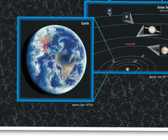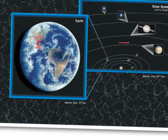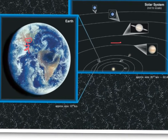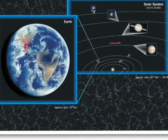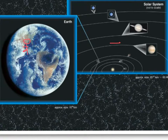Earth is one of eight planets that orbit the sun. Collectively, we call the sun and the eight planets and other miscellaneous things that gravity holds to our sun — we call that the solar system.